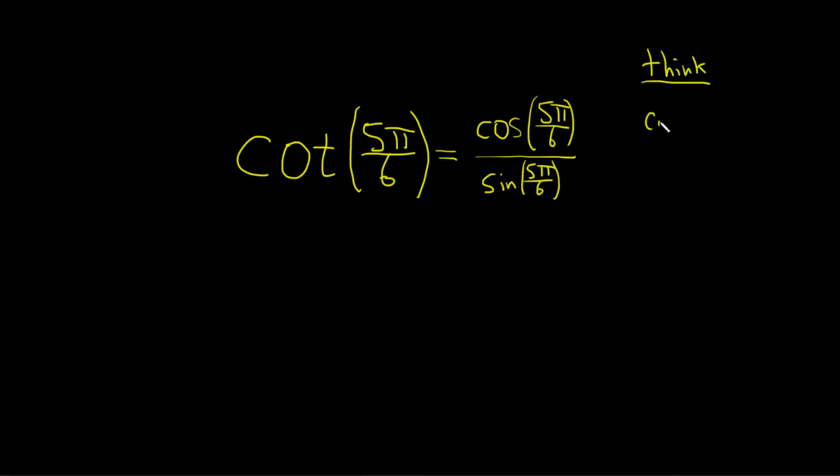So the cosine of π over 6 is the square root of 3 over 2, and the sine of π over 6 is 1 half. I feel like this might be the hard part for a lot of people, and that's okay. It's normal. This takes a lot of work.